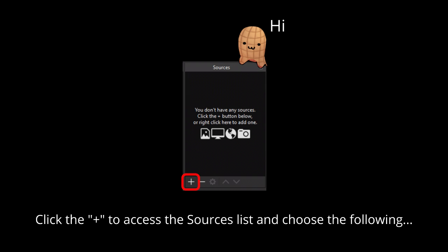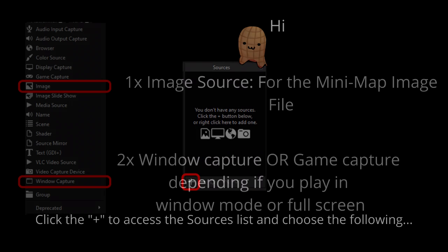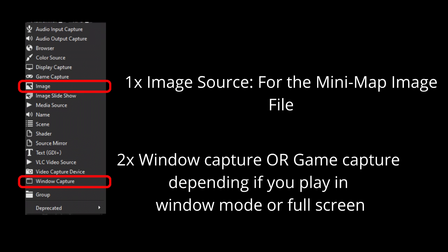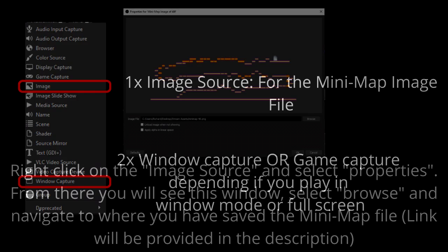Once you have OBS downloaded, click the plus sign to access the source list and choose the following. You will need one image source and two window captures or game captures, depending on whether you play in window mode or full screen.